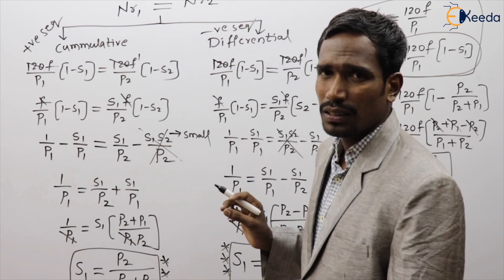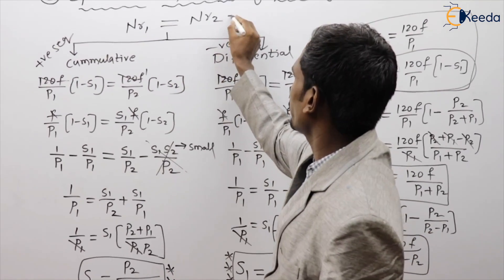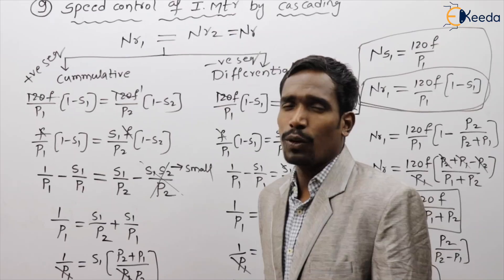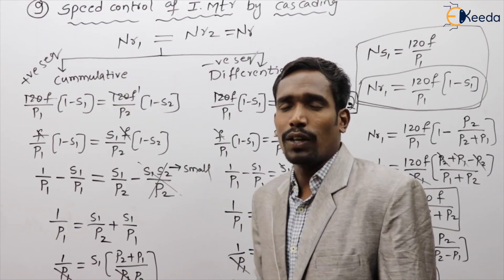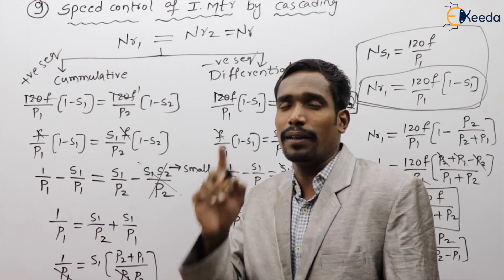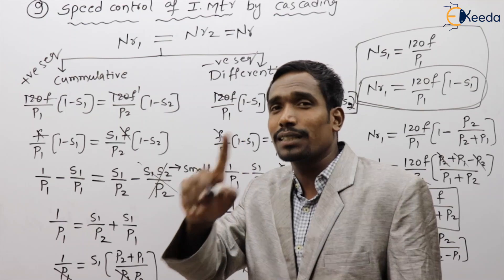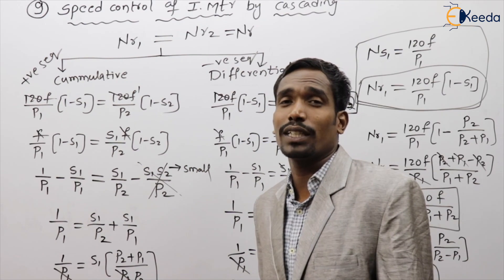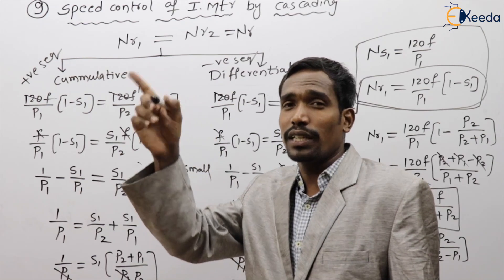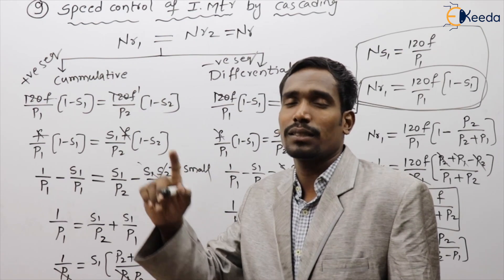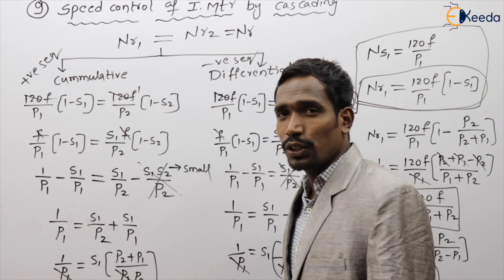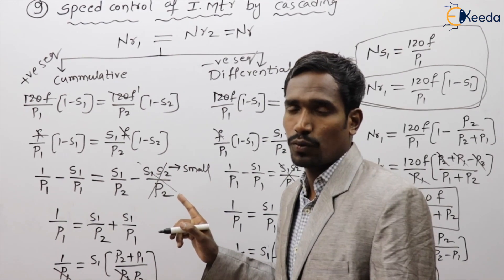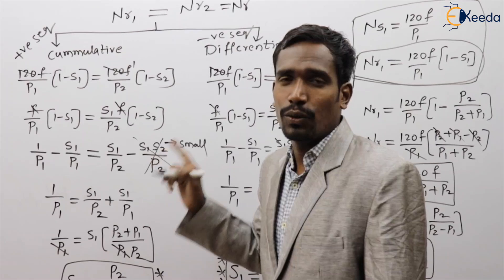In summary for cascading: nr1 = nr2 = nr. For cumulative connection, the rotor speed is 120F / (P1 + P2). For differential connection, the rotor speed is 120F / (P1 − P2). The slip values follow accordingly from these results.